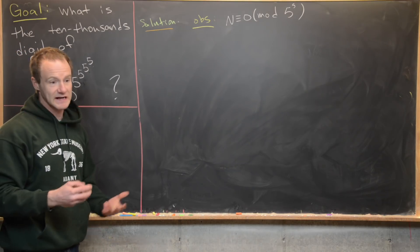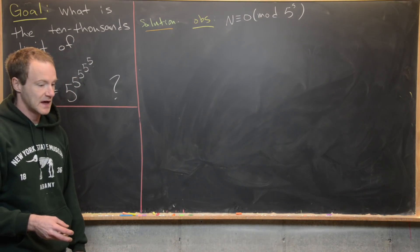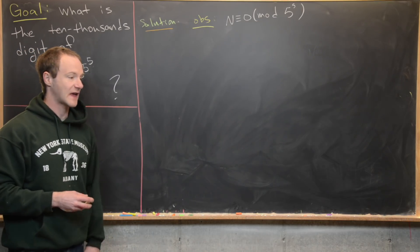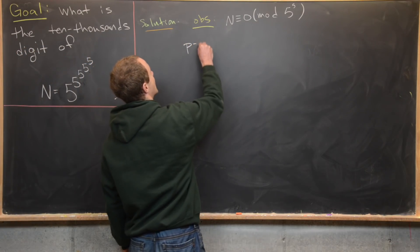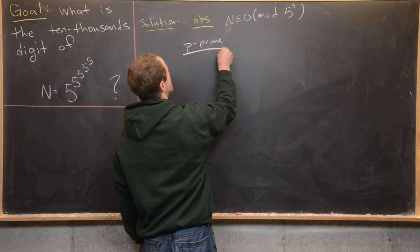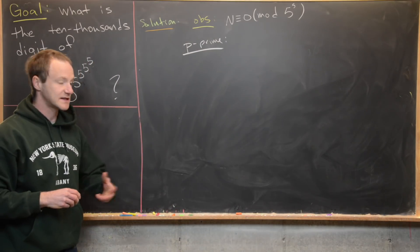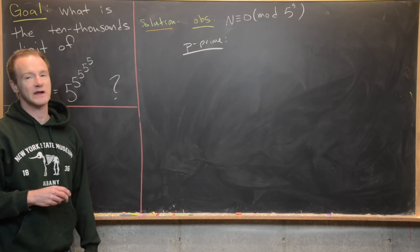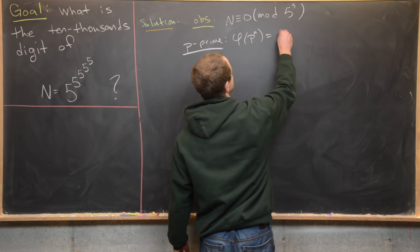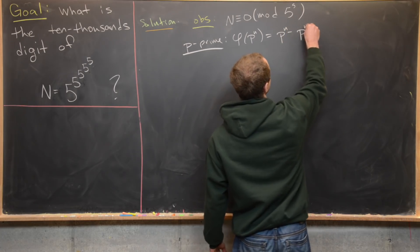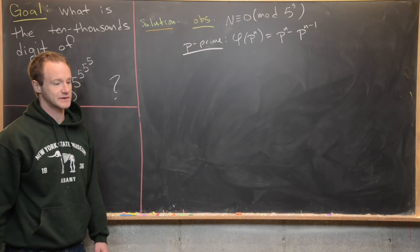Now let's work modulo two to the five using Euler's generalization of Fermat's little theorem. Recall the formula for Euler's totient function: for a prime P, phi of P to the N equals P to the N minus P to the N minus one. I have a proof of this in my number theory playlist if you want to check that out.